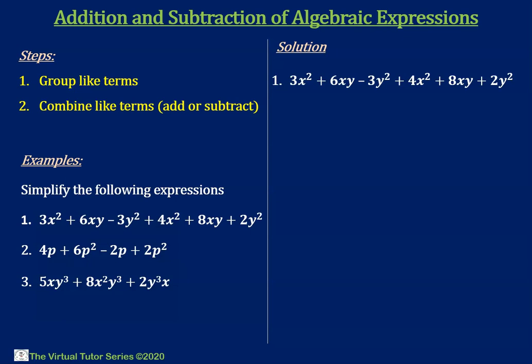For Example 1, step one is to group like terms. So we have 3x squared and 4x squared to be like terms. 6xy and 8xy are also like terms, and finally negative 3y squared and 2y squared are like terms.